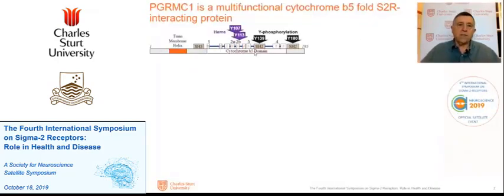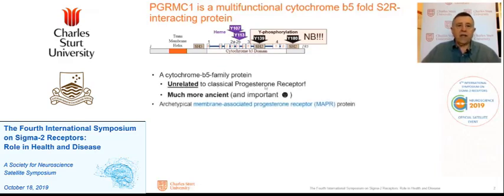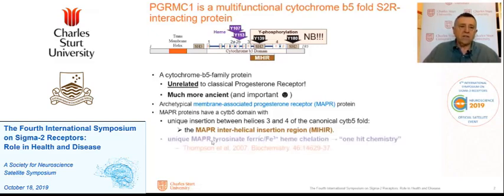Here's just a schematic of the protein. I'd draw your attention to those two tyrosines, which are phosphorylated. It has a cytochrome B5 fold. It is not related to the progesterone receptor. It's the archetypical member of the membrane-associated progesterone receptor family, or MAPR family. These have a MAPR interhelical insert region between helices 3 and 4 of the canonical cytochrome B5, which defines the family.